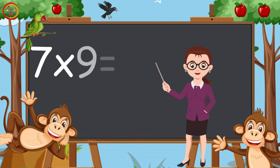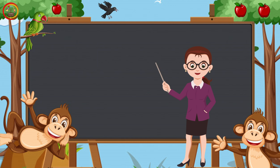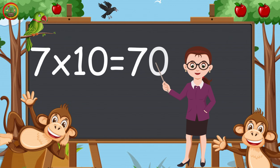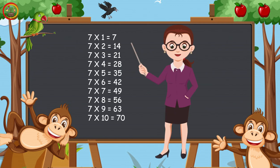Seven nines are sixty-three. Seven tens are seventy. Students, let's repeat the table of seven. Seven ones are seven.